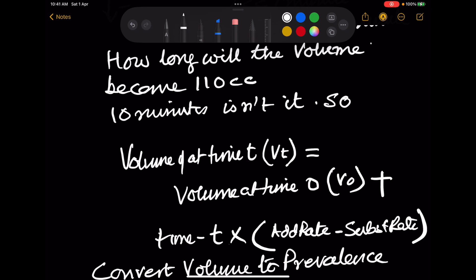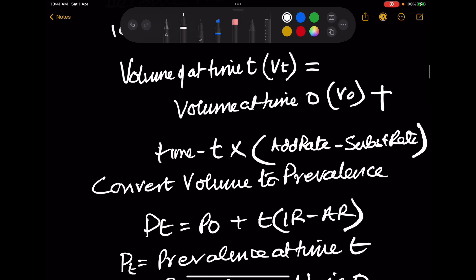You can say volume at time t will equal volume at time 0, which is 100, plus time into addition rate 2 cc minus subtraction rate 1 cc. So this formula explains the volume at time t that you will have to prepare for, that you will have to generate resources to manage.